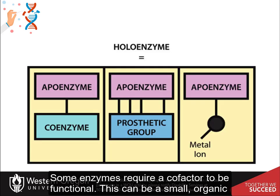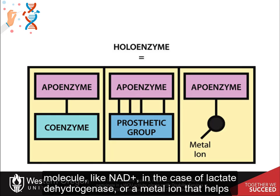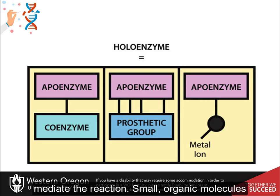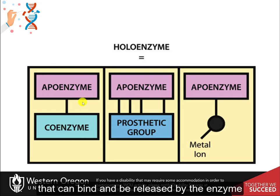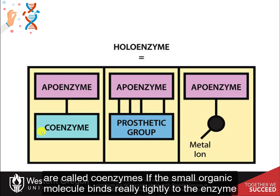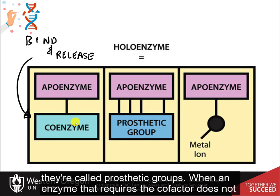Some enzymes require a cofactor to be functional. This can be a small organic molecule like NAD in the case of lactate dehydrogenase, or a metal ion that helps mediate the reaction. Small organic molecules that can bind and be released by the enzyme are called coenzymes. If the small organic molecule binds really tightly to the enzyme, it is called a prosthetic group.